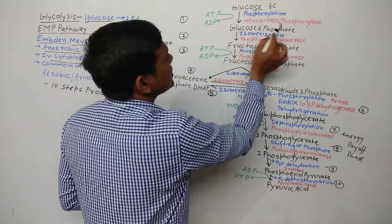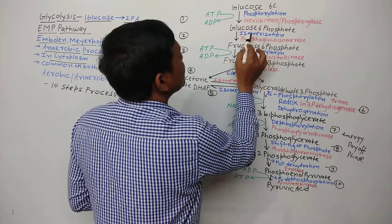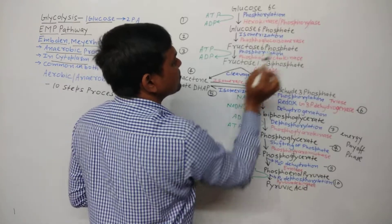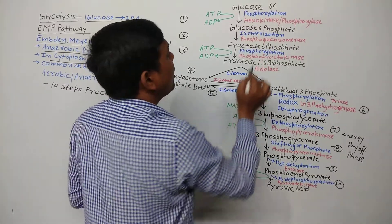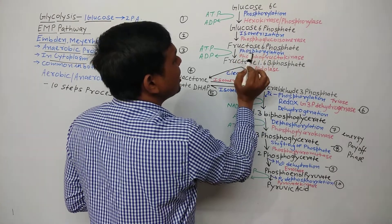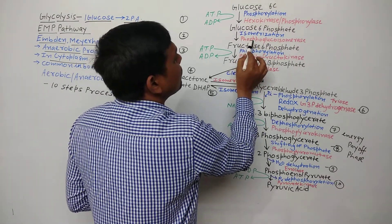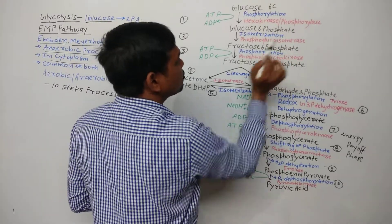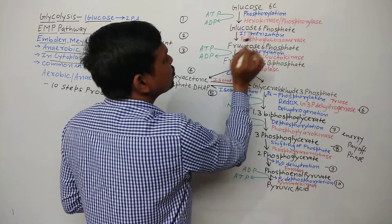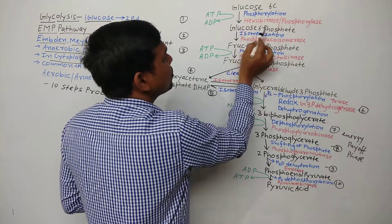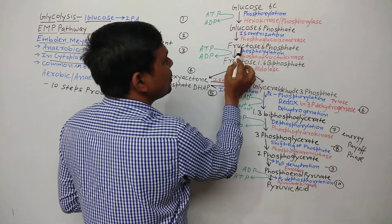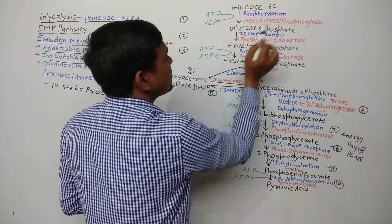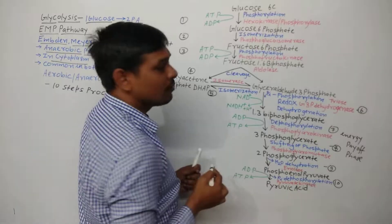In step 2, glucose 6-phosphate undergoes isomerization and is converted into fructose 6-phosphate. The enzyme that assists this process of isomerization is phosphoglucoisomerase.